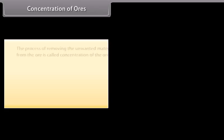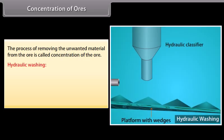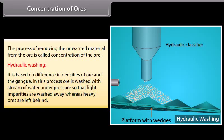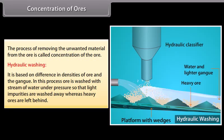Concentration of ores. The process of removing the unwanted material from the ore is called concentration of the ore. The important methods for concentration of the ore are hydraulic washing. It is based on difference in densities of ore and the gang. In this process, ore is washed with stream of water under pressure so that light impurities are washed away whereas heavy ores are left behind.